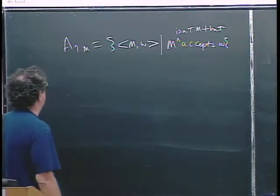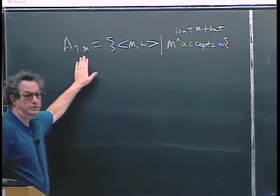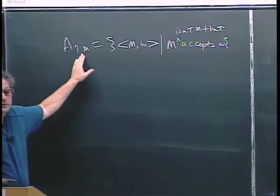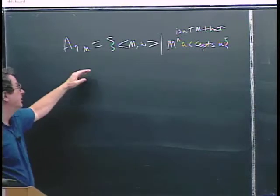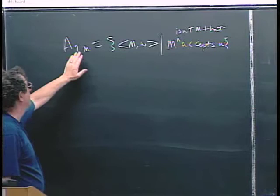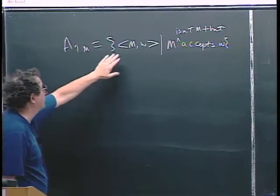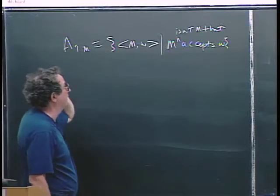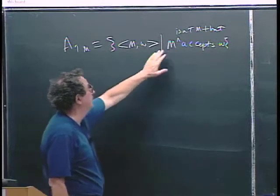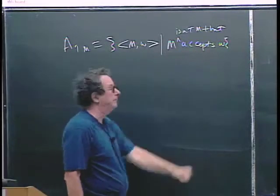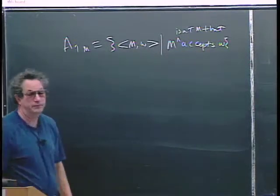We've already proven that ATM is undecidable. There's no Turing machine that can take in a description of M and W and decide whether or not M accepts W. We did that proof by self-reference.